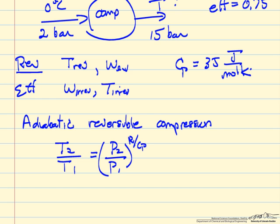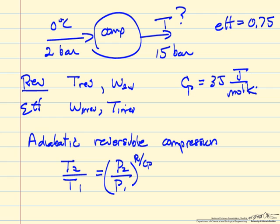So absolute temperature, T2 over T1. So this is T2, this is state 1, this is state 2. This is the reversible case. So T2 reversible is related to the pressures, gas constant and the heat capacity.